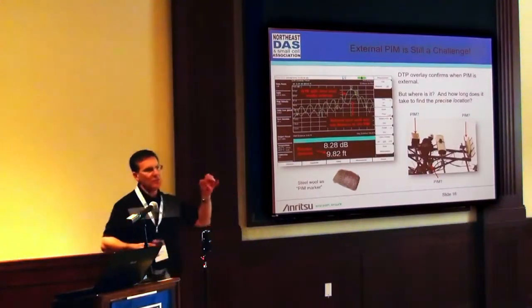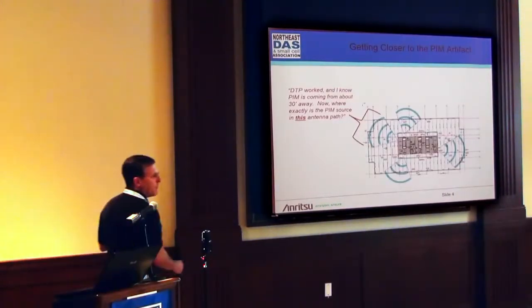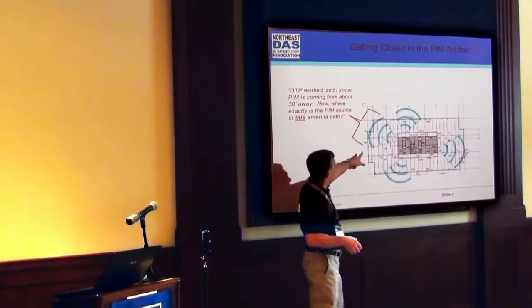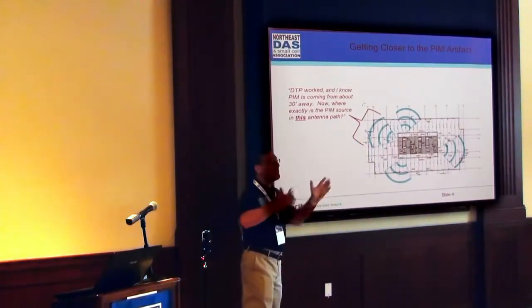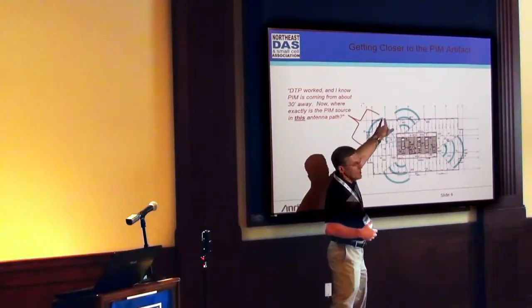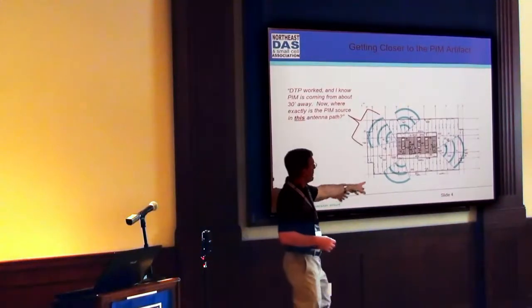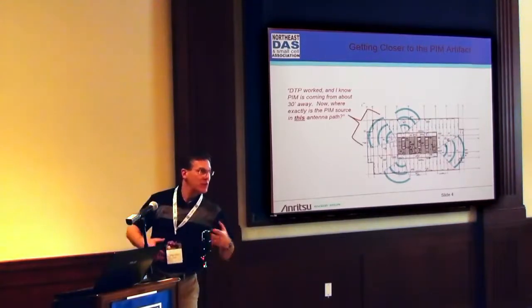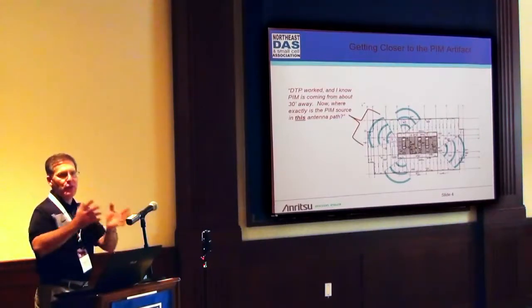But what about when the PIM source is outside of the antenna? What if the antenna is sitting on this roof, pointing down to a subscriber base, and the antenna has a 30-degree beam width, and the PIM tester says your problem is 45 to 50 feet away? Is it here, here, or here? I don't know. I need a way to quickly locate that the PIM is not coming from the antenna, but it's somewhere outside of the antenna. The way we do that is with a combination of spectrum analysis and PIM testing.